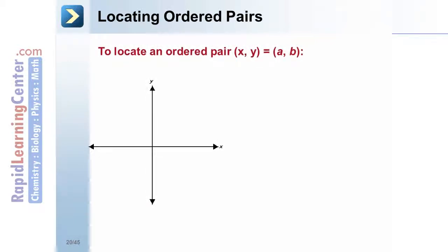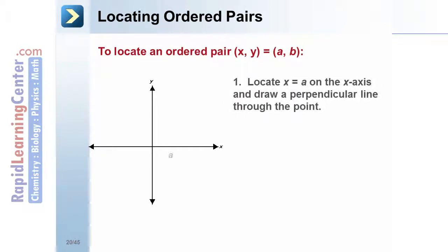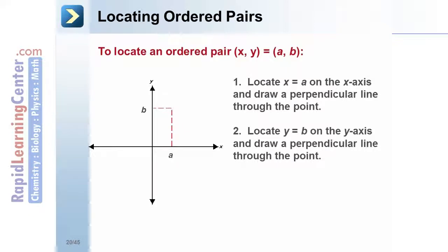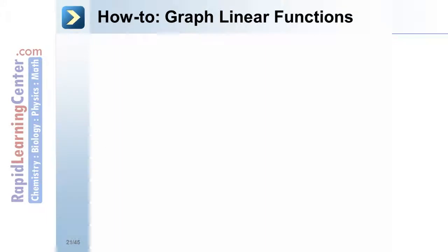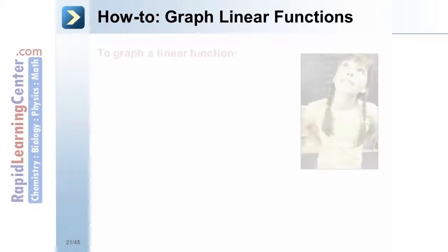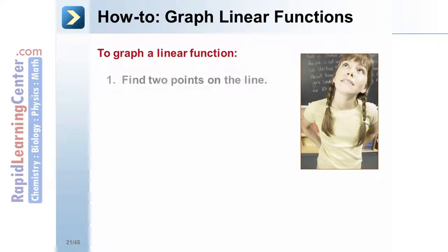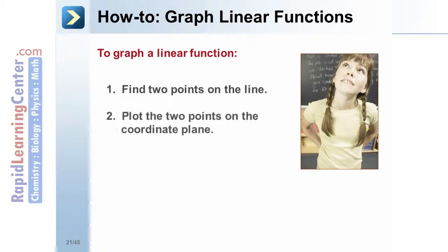Locating ordered pairs: to locate an ordered pair where x equals a and y equals b, one, locate x equals a on the x-axis and draw a perpendicular line through the point; two, locate y equals b on the y-axis and draw a perpendicular line through the point; and three, plot a point at the intersection of the lines. This point represents ordered pair (a, b).